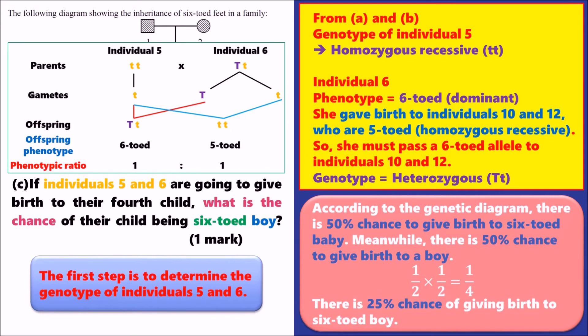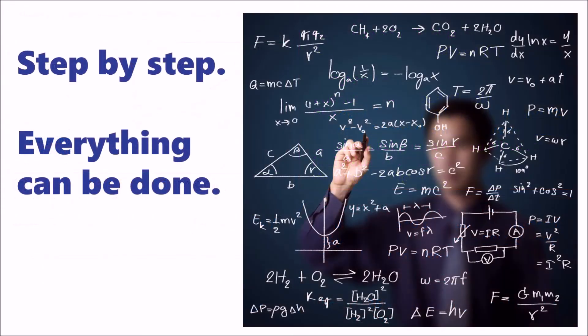Based on the example above, we know that basic genetics questions can be done step by step. We need common language and basic concepts, then use the guiding questions to help ourselves deduce the genotype or the chance of giving birth to a particular type of offspring.